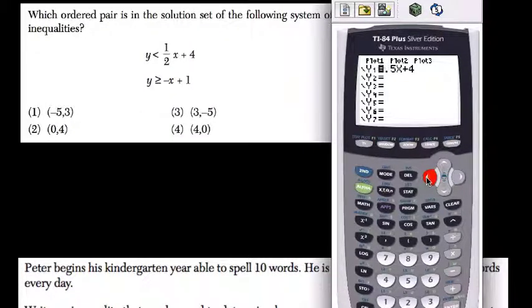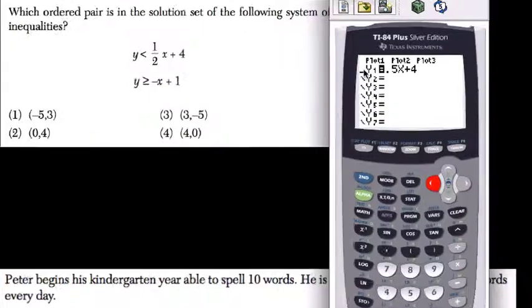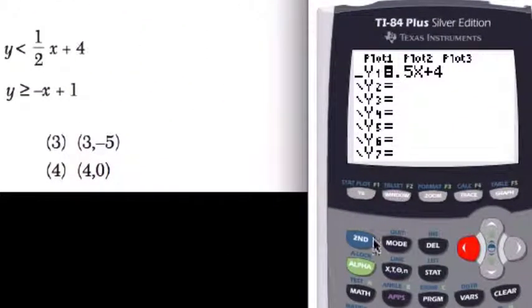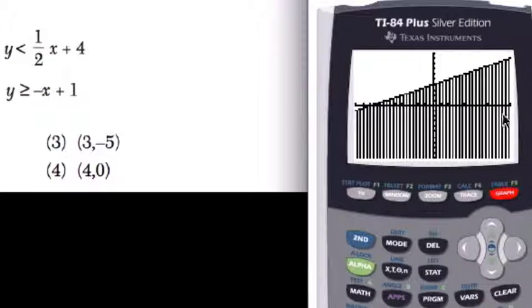So here, if we scroll to the left on our graphing calculator, to this region over here, we can change it from a line to whatever we want. So if you hit enter, you get different options here. You can see this triangle here shading above. We want to shade below. That's the option right there. And now when we graph, you can see it shades below the line.